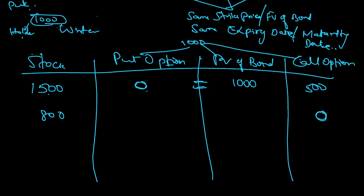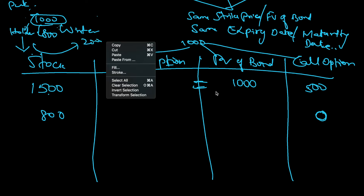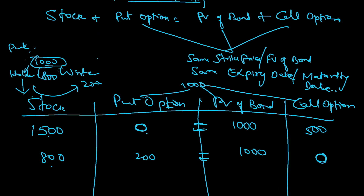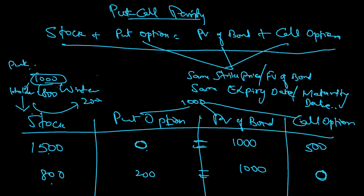For the put option: 1000 is the strike price, the holder believes the price will come down, and indeed the spot price has come down to 800. The holder is happy and gets a benefit of 200. So put option value = 200, present value of bond = 1000. This gives: 800 + 200 = 1000. That's exactly why the formula is: stock plus put option equals present value of bond plus call option.